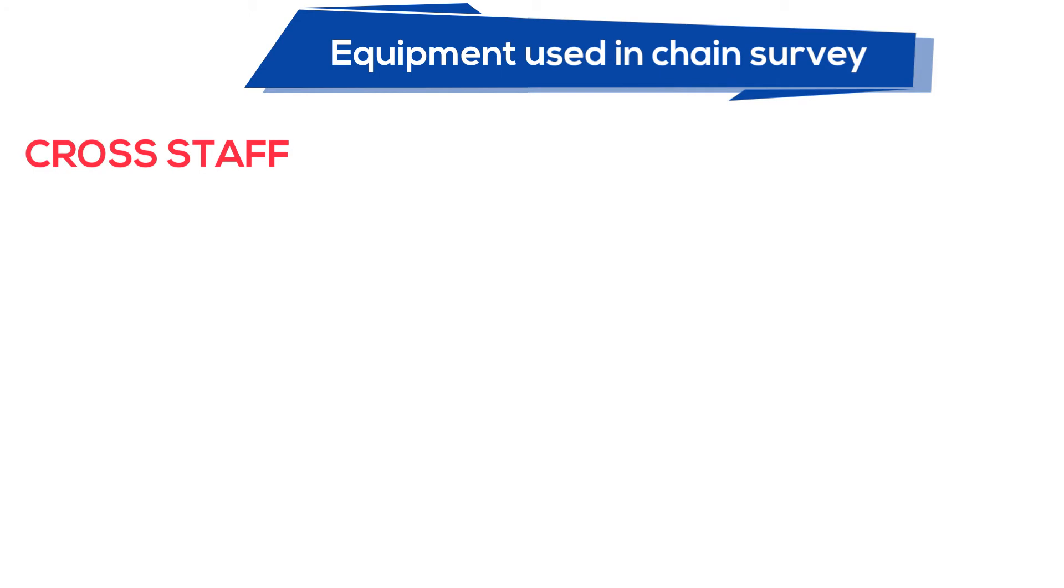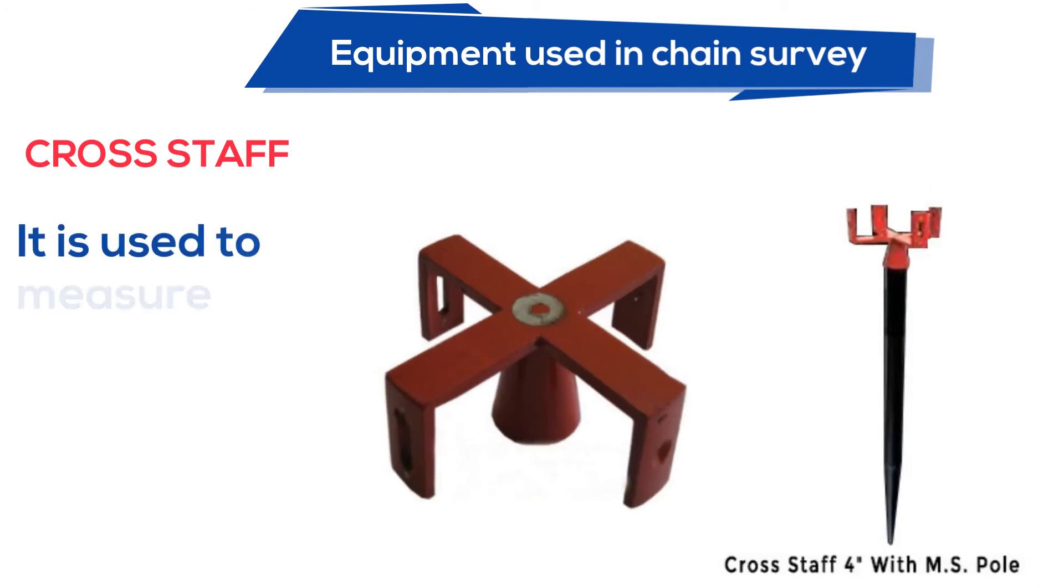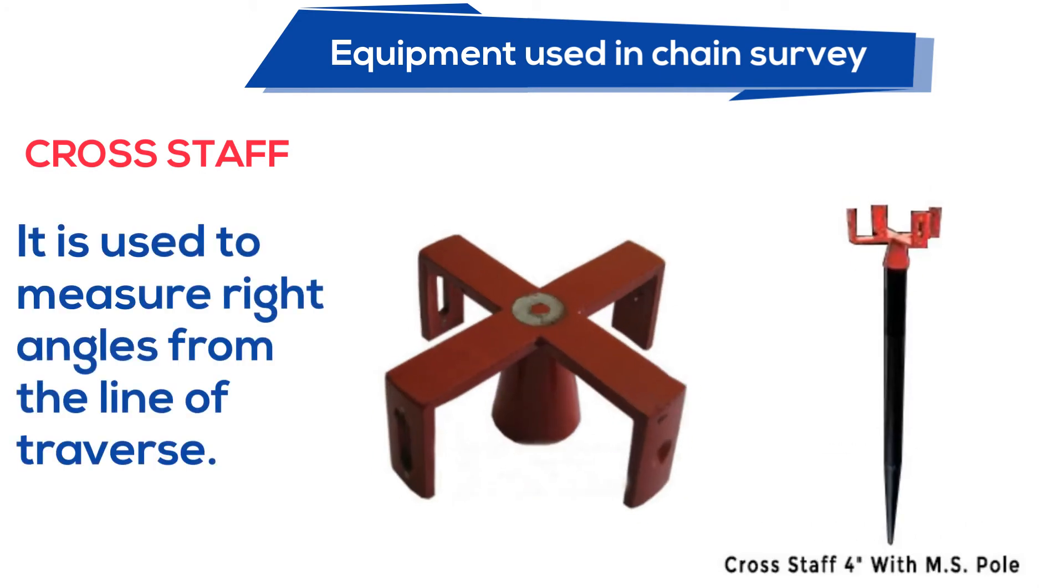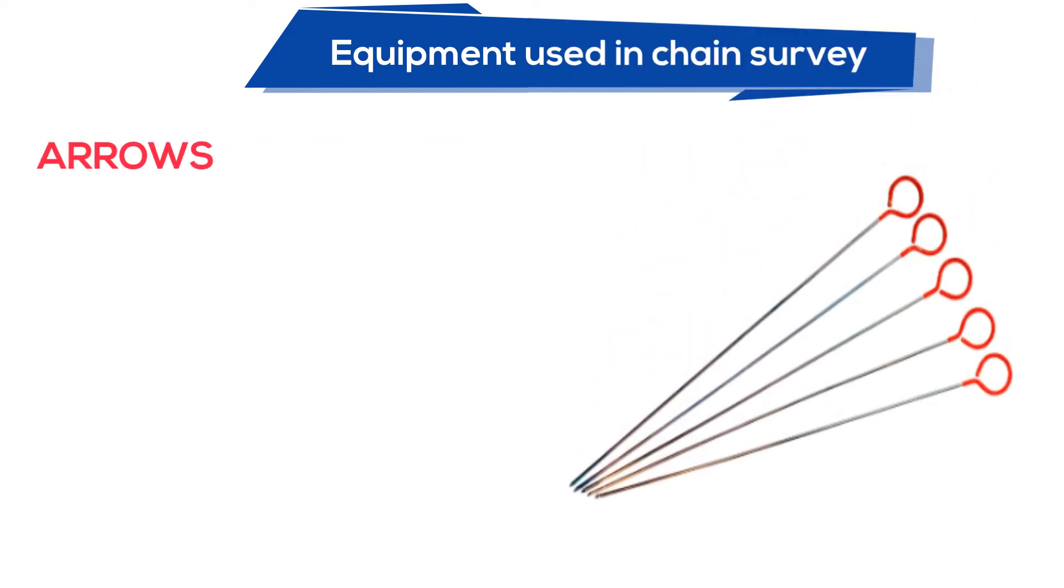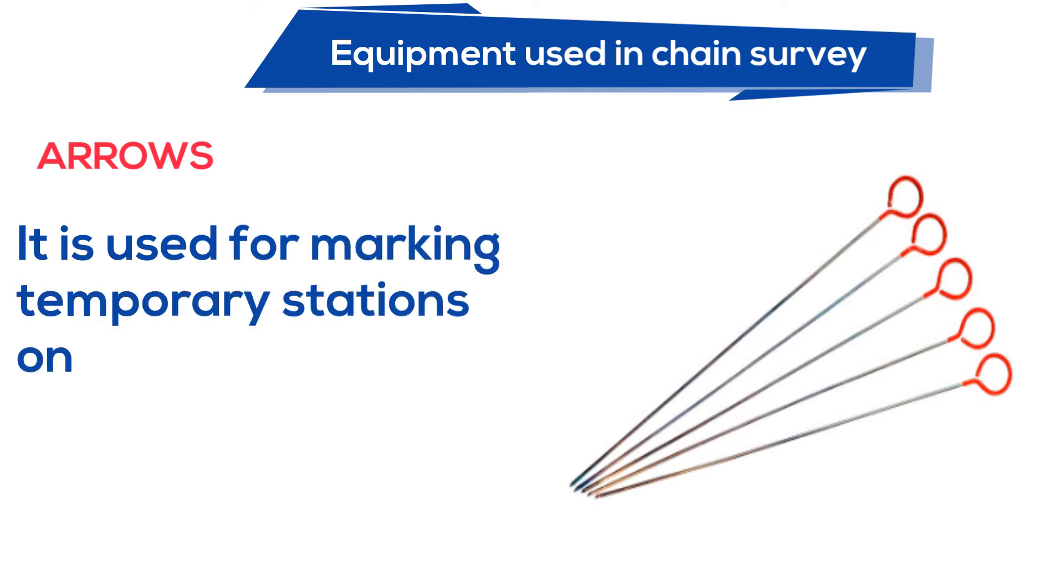Cross staff, it is used to measure right angles from the line of traverse. Arrows, it is used for marking temporary stations on the ground.